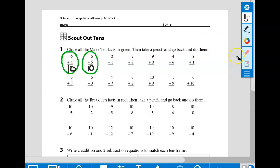Number two is asking you to do something very similar. Only this is where you need your red crayon. Number two says circle all the break 10 facts in red. Remember, a break 10 fact starts with 10 and takes something away.